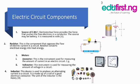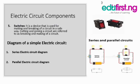The fifth component is the switch. This is a device used to make and break a circuit — that is, to control the flow of the circuit in a safe way. Cutting and joining a circuit are referred to as breaking and making a circuit. When we talk about a switch, we are talking about control — what we use to control the flow of current, to open or close it.